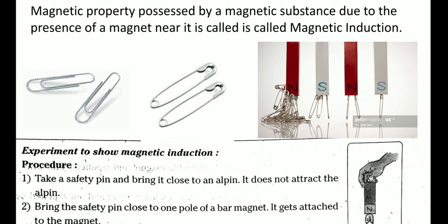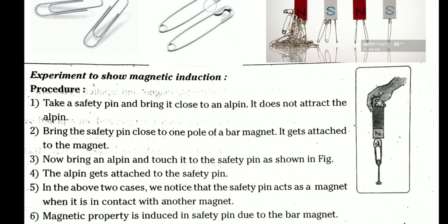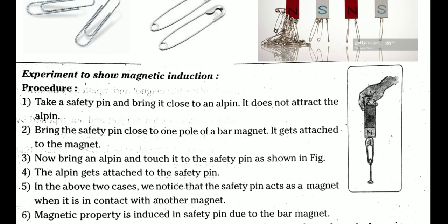In the picture, you can see safety pins and alpins. Now we are going to perform an experiment to show magnetic induction. Take a safety pin and bring it close to an alpin — does it attract? No, the safety pin does not attract the alpin. Next, bring the safety pin close to one pole of a bar magnet. It gets attracted to the magnet and attaches to it.